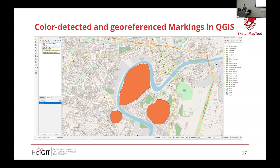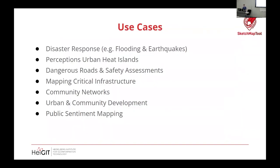In terms of use cases, we've done a lot with flooding, especially with Red Cross Red Crescent societies, but you can also use it for perceptions of heat islands, dangerous roads and safety assessments, mapping critical infrastructure, community networks, urban and community development, and public sentiment mapping. Anytime you're annotating a map, you can adapt this tool to that purpose. The goal is that it's a simple way to digitize, georeference, and extract vectors from a hand-annotated map.